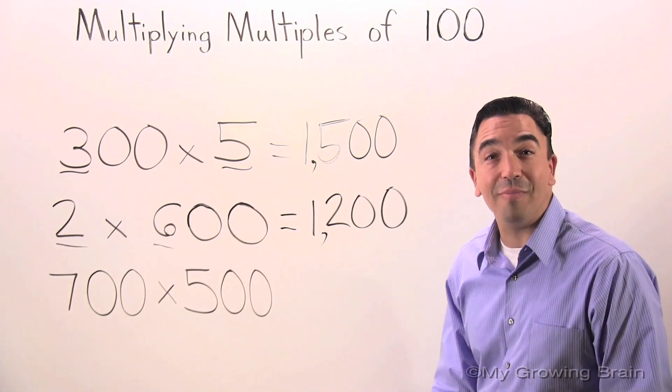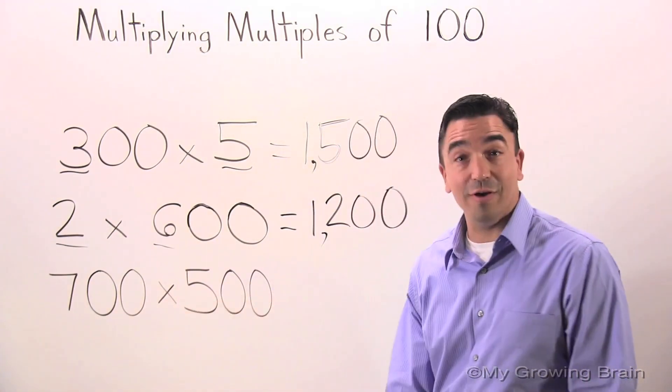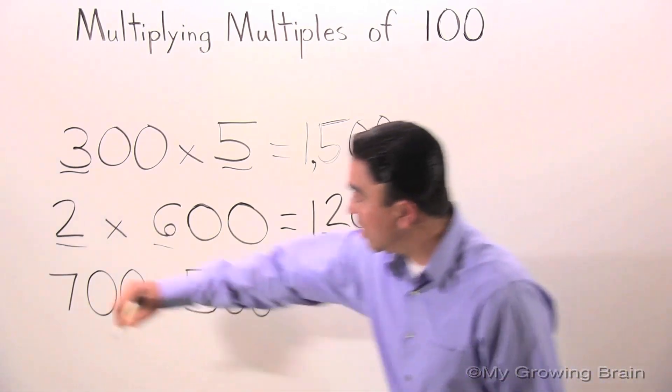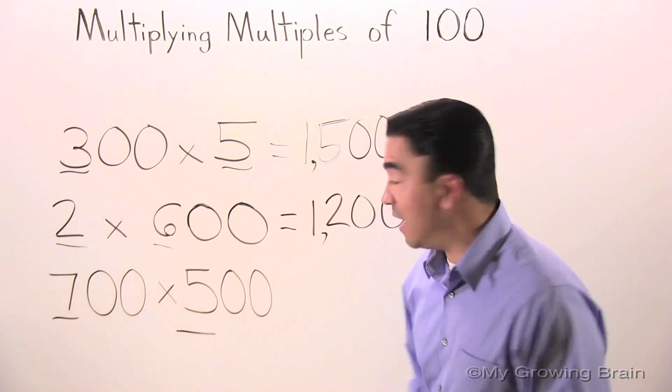Let's go to the third problem. 700 times 500. Once again, multiply 7 times 5, which is equal to 35.